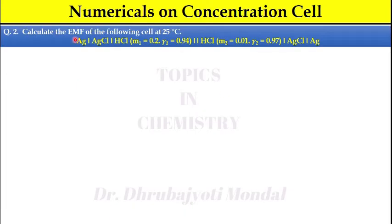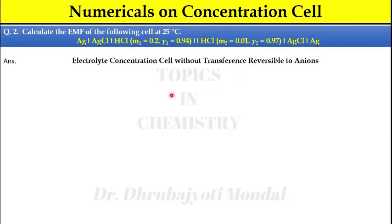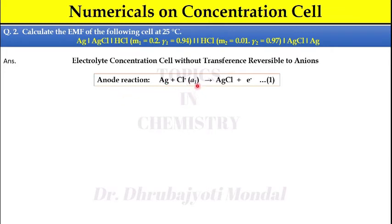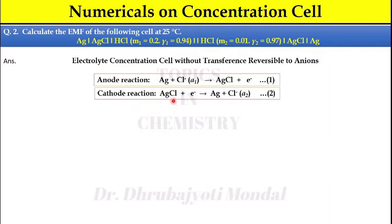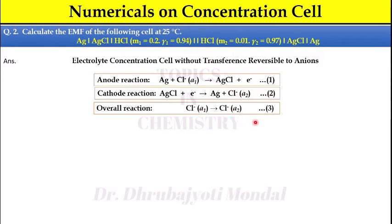Now see Question 2: Calculate the EMF of the following cell at 25°C. The cell is: Ag | AgCl | HCl (M₁ = 0.2, γ₁ = 0.94) ‖ HCl (M₂ = 0.01, γ₂ = 0.97) | AgCl | Ag. The electrolyte concentrations are different, so this is an electrolyte concentration cell. The double vertical line means without transference. The cell reaction depends on the concentration of Cl⁻, so it is reversible to anions. The anode reaction is: Ag + Cl⁻ (A₁) → AgCl + e⁻. The cathode reaction is: AgCl + e⁻ → Ag + Cl⁻ (A₂). The overall reaction is: Cl⁻ (A₁) → Cl⁻ (A₂), so the cell depends only on anion concentration.